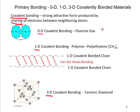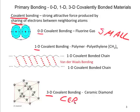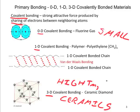0-D covalent bonding occurs in small molecules such as fluorine gas. Other examples include carbon dioxide, methane, and water. However, these materials are generally not as important as 1-D or 3-D covalent bonding to engineers. 3-D covalent bonding occurs in ceramics, which behave similarly to ionically bonded ceramics — both have high melting temperature and elastic modulus, but a low coefficient of thermal expansion because of the high bond strength.